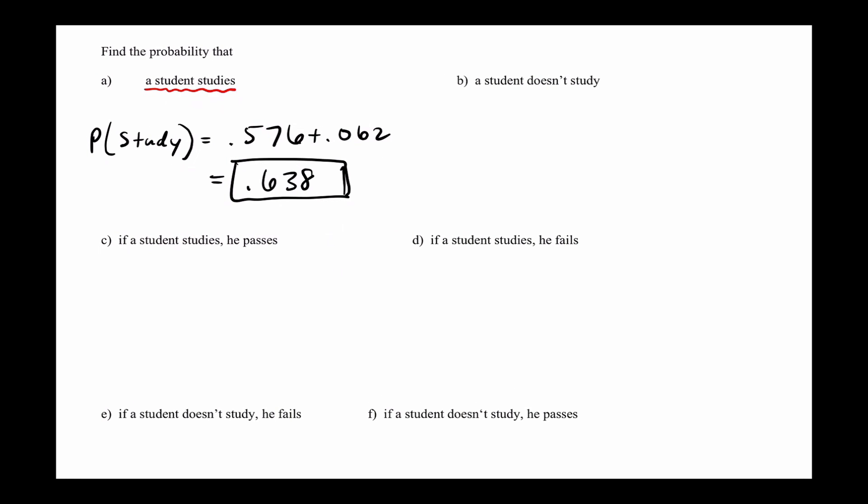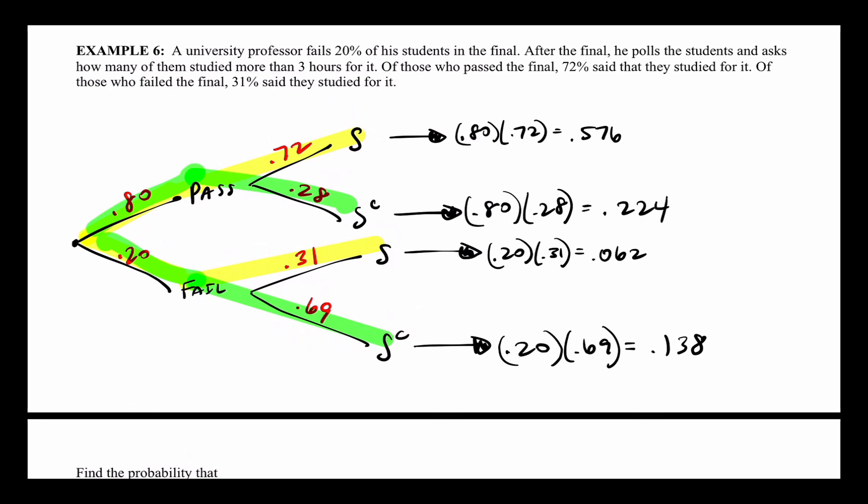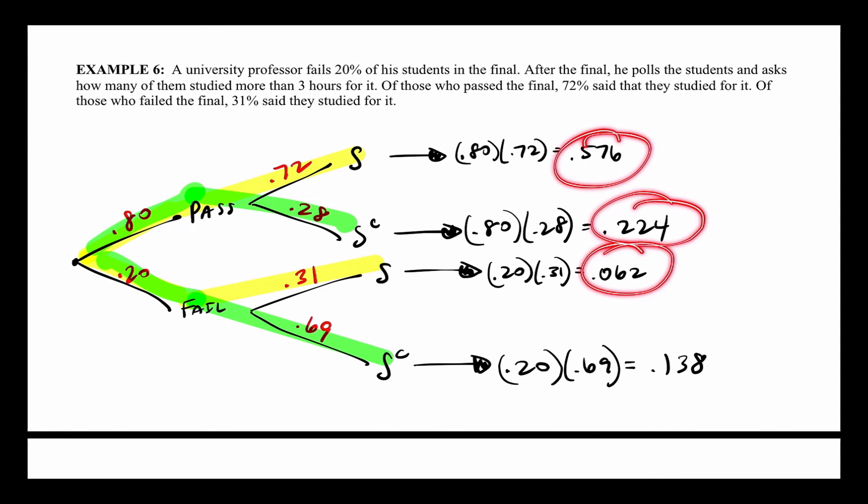The completed tree diagram has four outcomes. If you add up all the probabilities at the ends of the branches, they equal one — because one of those four things must happen. That's how you can check your answer: if all the end probabilities sum to one (or very close), you did everything right.